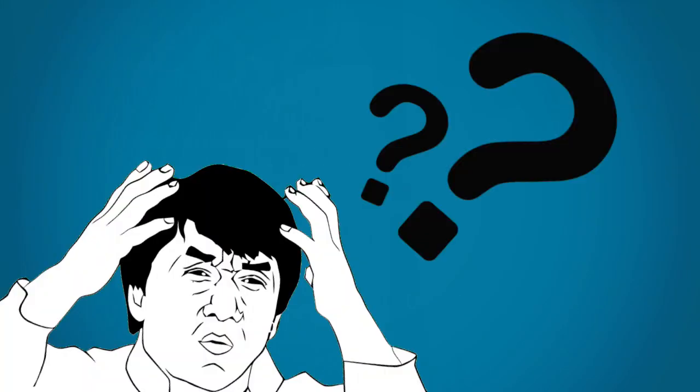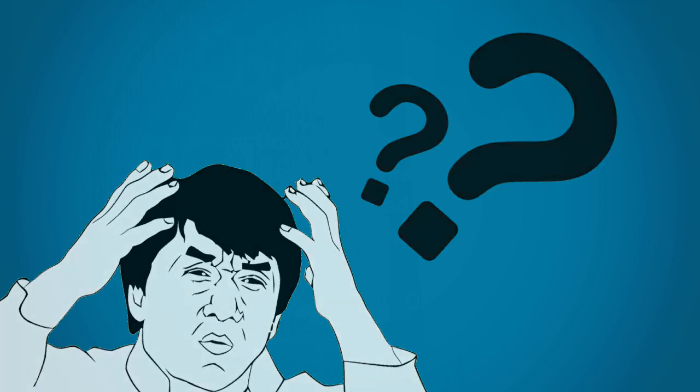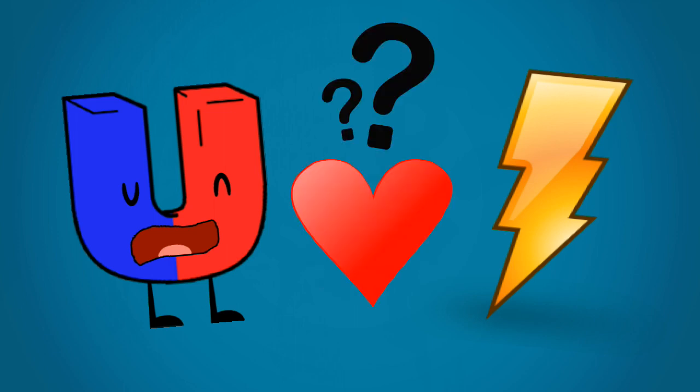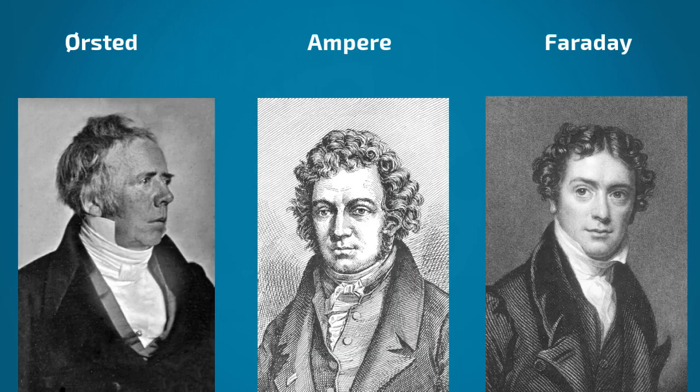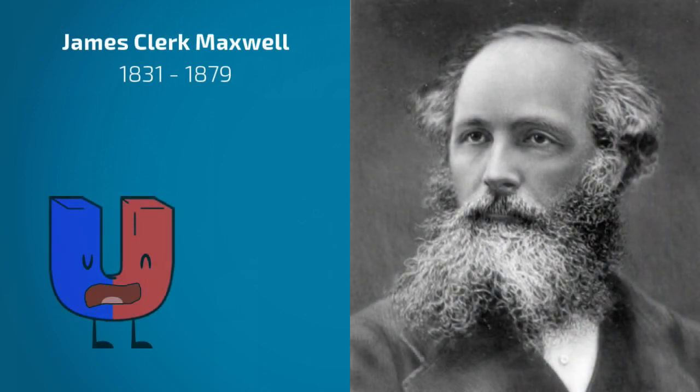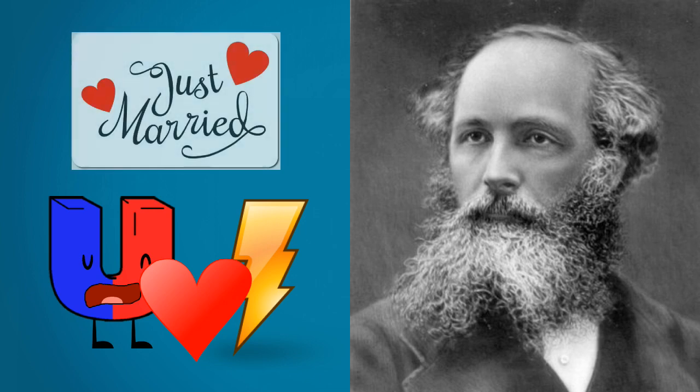But in case you didn't catch all that, I'm going to take a minute to break it down for you, and we'll begin 150 years ago. Back in the day, electricity and magnetism were originally thought to be two separate forces. A relationship was observed between the two forces by many brilliant physicists like Faraday, Ampere, and Oersted. However, it was James Clerk Maxwell in 1873 who described the union of these forces, which we call electromagnetism.